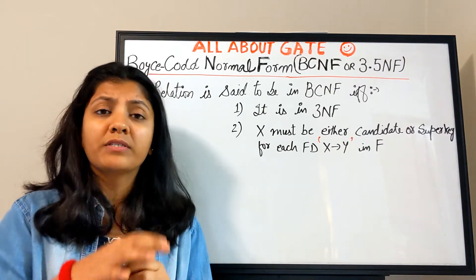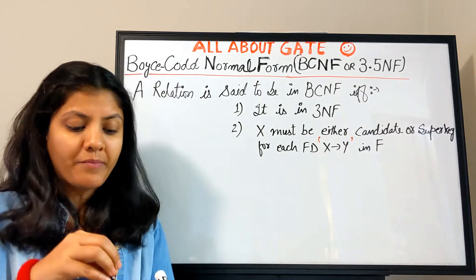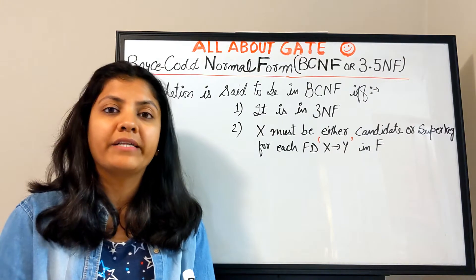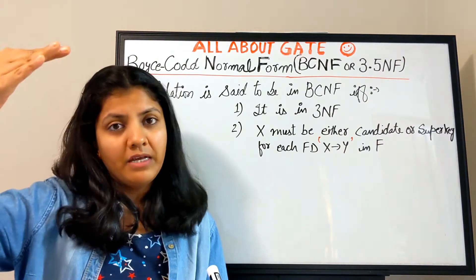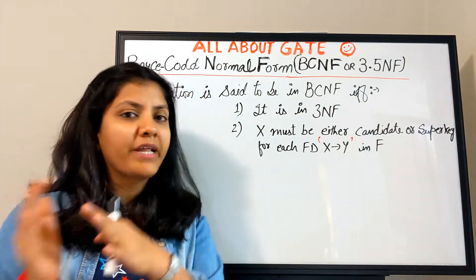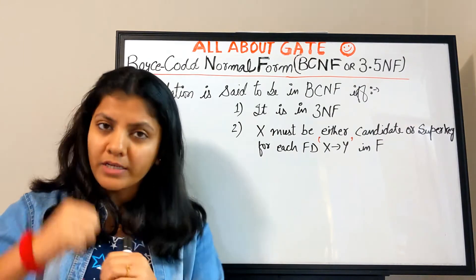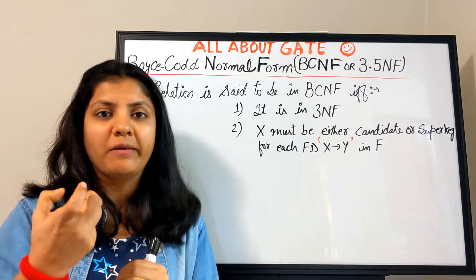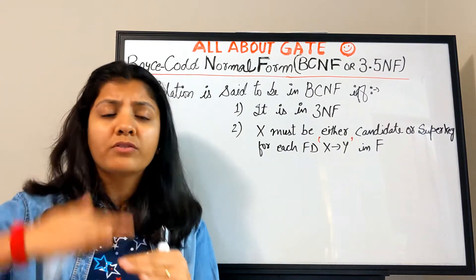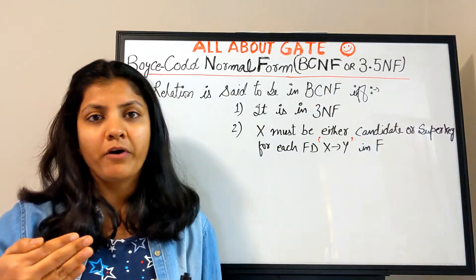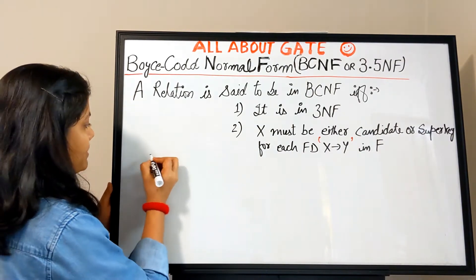We go higher in normal forms because at every level we are setting aside some level of redundancy or anomaly that is still present. Due to certain types of functional dependencies, redundancy remains, and we try to eliminate it by reaching the next level of normal form.